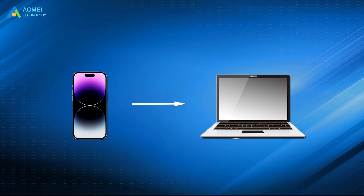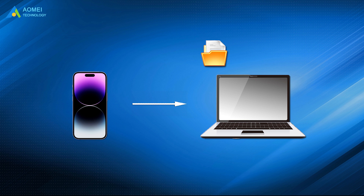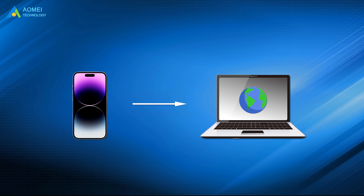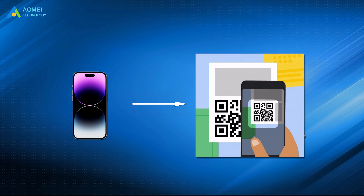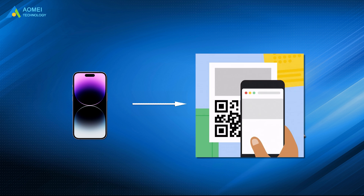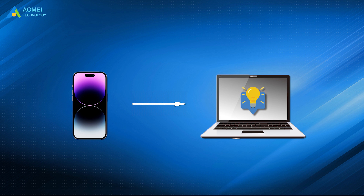Usually, if you want to AirDrop files from iPhone 14 to PC, you should go to the website or turn on the app on iPhone and computer, scan the QR code, or follow the on-screen prompts to establish the connection. Then choose the data you need and start the transfer.